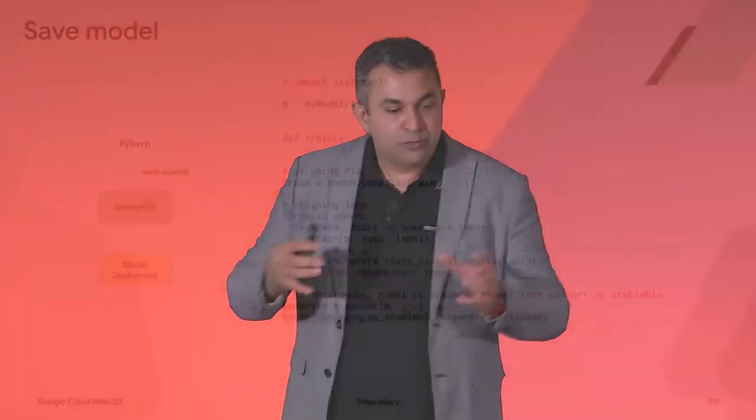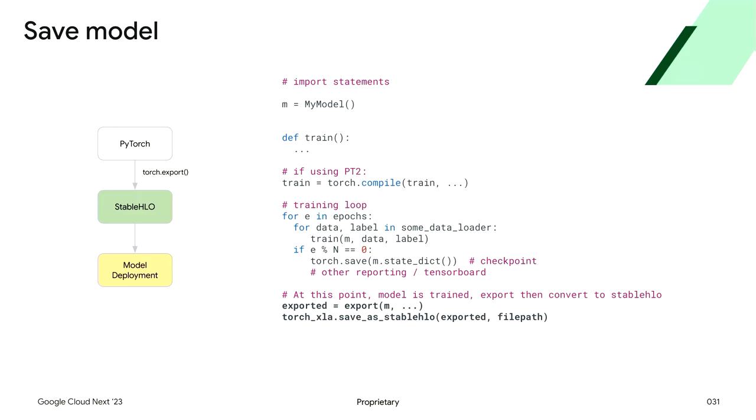Finally, PyTorch 2.1 brings a new experimental API for Torch export. With this API, you can export your PyTorch model into a stable HLO graph and take it for deployment on server or on edge. All these amazing features are available in PyTorch 2.1, and we are really excited for the community to try them. One of our main goals from the PyTorch XLA project is to ensure that the ecosystem around PyTorch and Cloud TPUs is strong and healthy. And so I'd like to invite my colleague Carlos from Lightning AI to talk about PyTorch Lightning and PyTorch XLA.